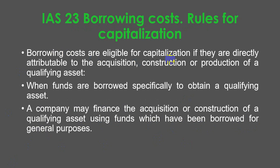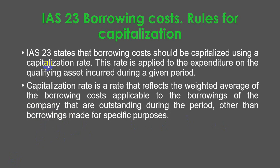Borrowing costs are eligible for capitalization if they are directly attributable to the acquisition, construction, or production of a qualifying asset. Funds may be borrowed specifically to obtain a qualifying asset, or a company may use funds borrowed for general purposes — in which case a weighted average rate must be applied. IAS 23 states that borrowing costs should be capitalized using a capitalization rate applied to the expenditure on the qualifying asset during the period. The capitalization rate reflects the weighted average of borrowing costs applicable to outstanding borrowings, other than those made for specific purposes.